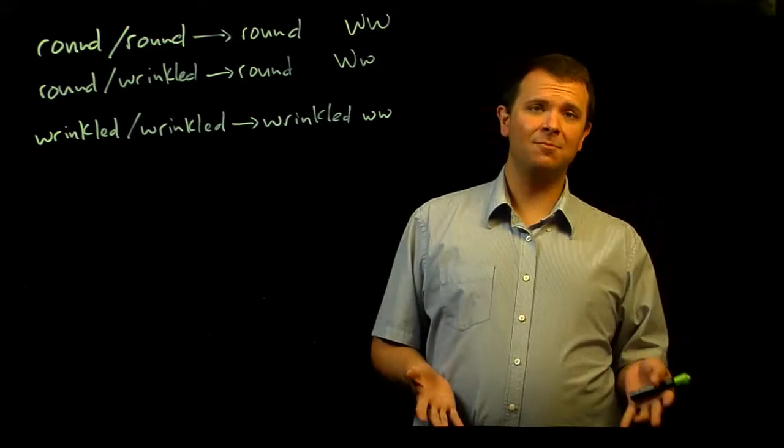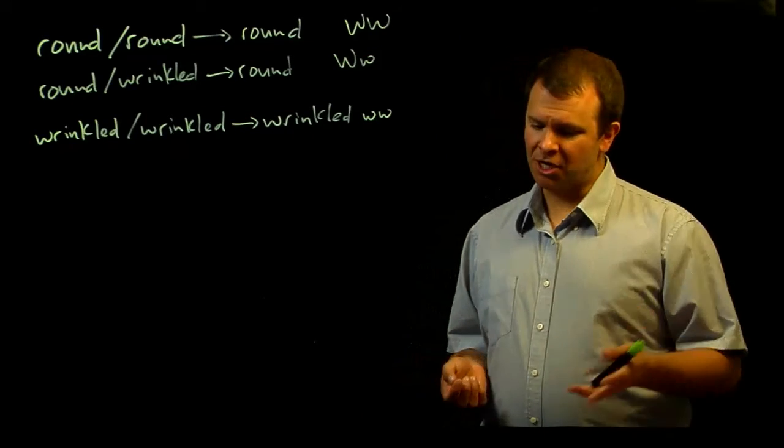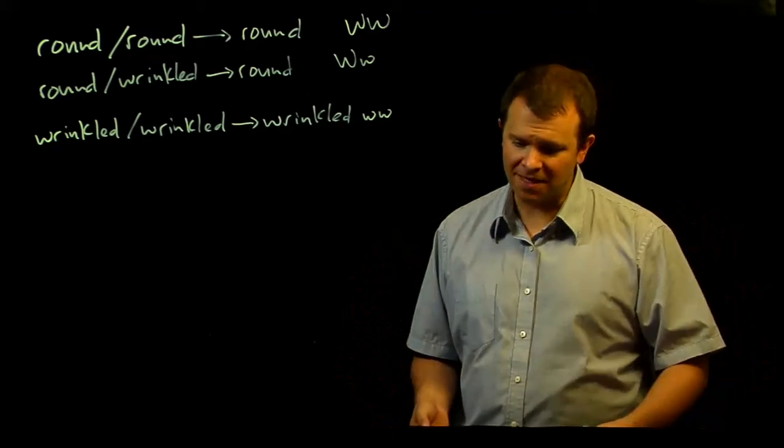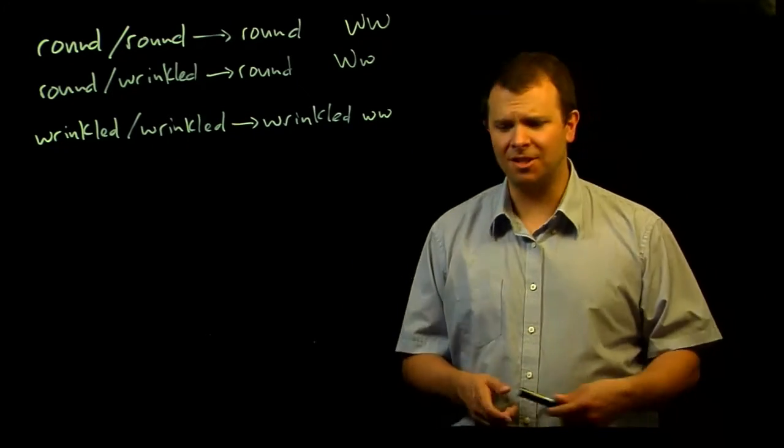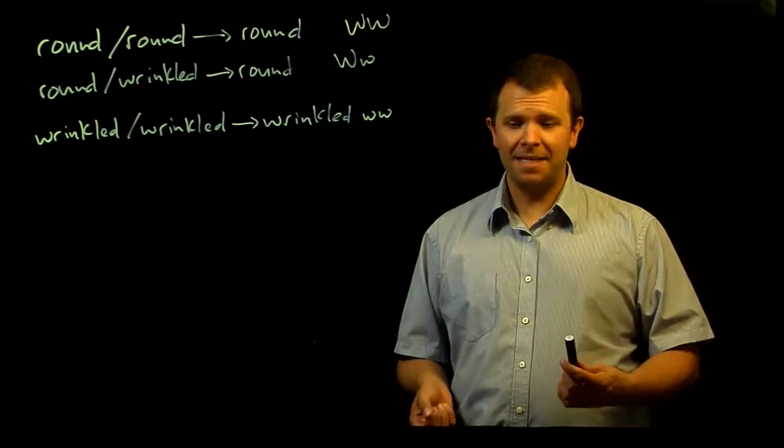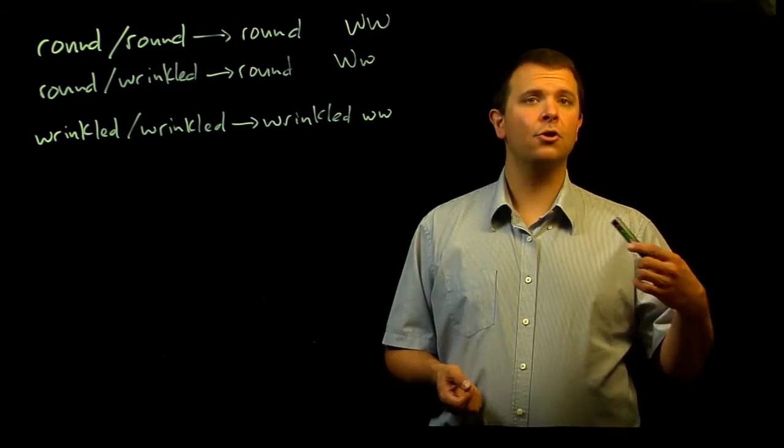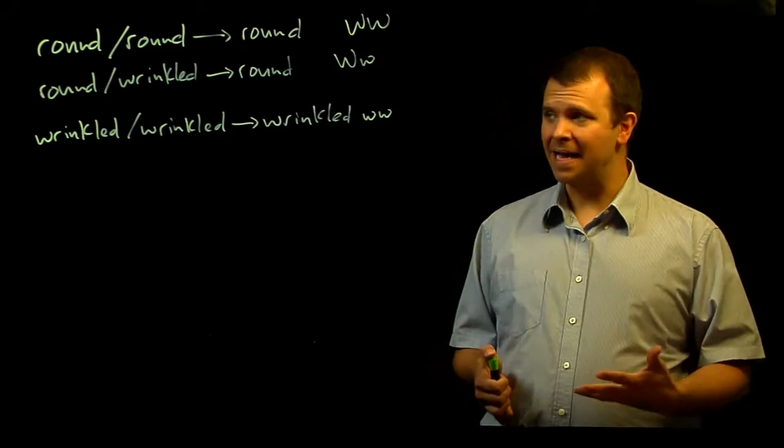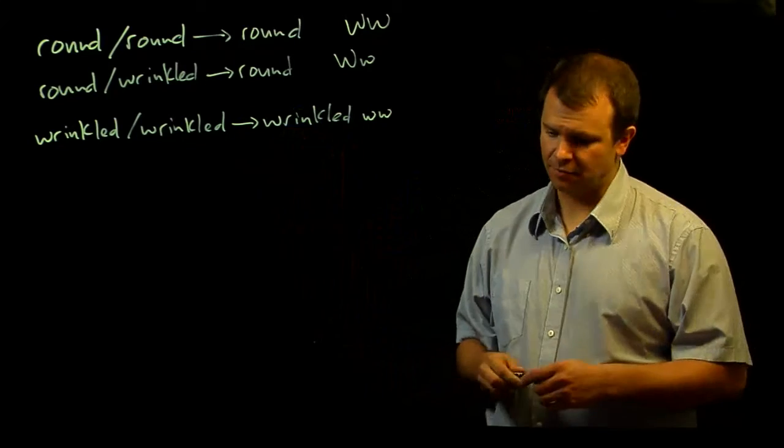And so even though we discuss Mendelian genetics in this chapter in terms of morphological phenotypes, observable changes in organisms, don't forget that the molecular cause of these phenotypes is always a change in DNA sequence.